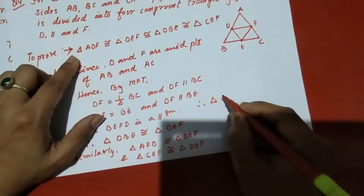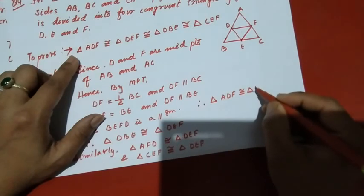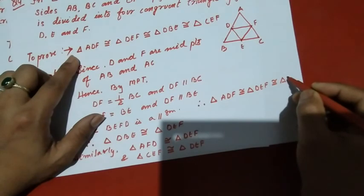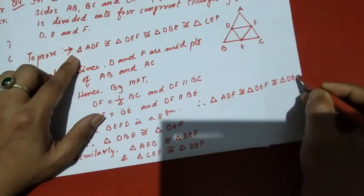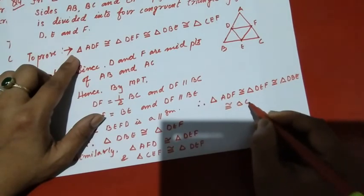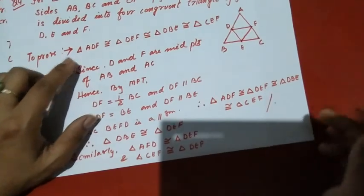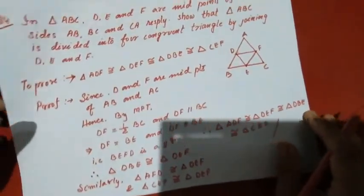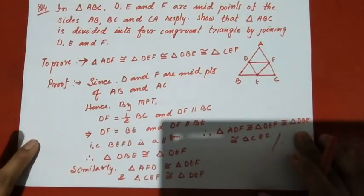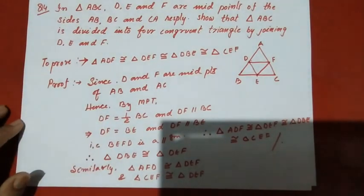Therefore, triangle ADF is congruent to triangle DEF, which is congruent to triangle DBE, which is congruent to triangle CEF. Hence, triangle ABC is divided into four congruent triangles by joining the midpoints D, E, and F. Thank you for watching, bye bye.